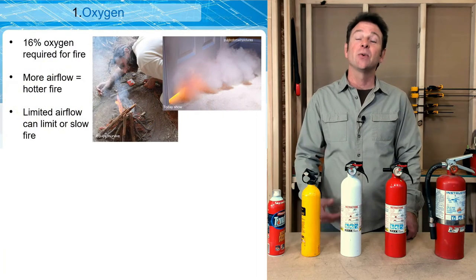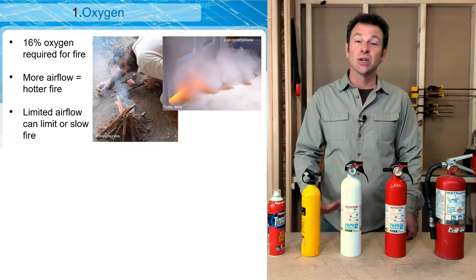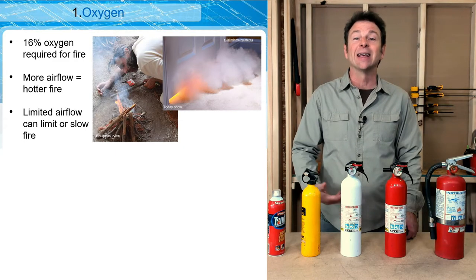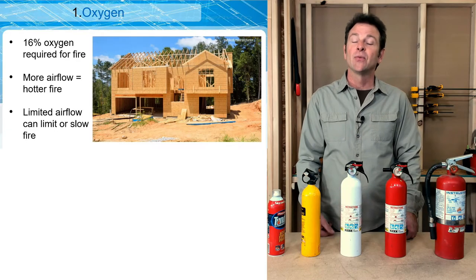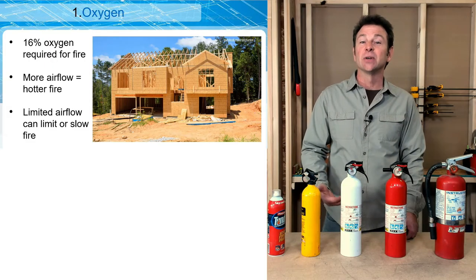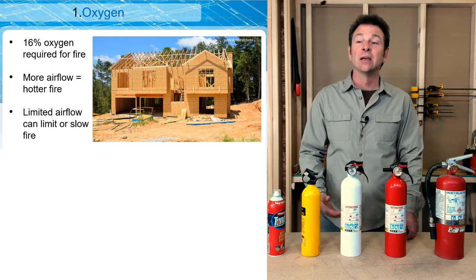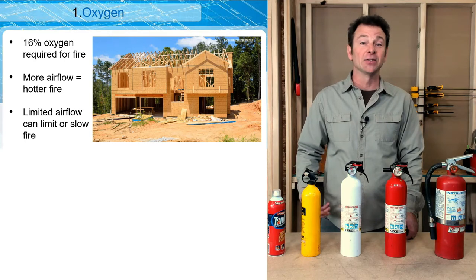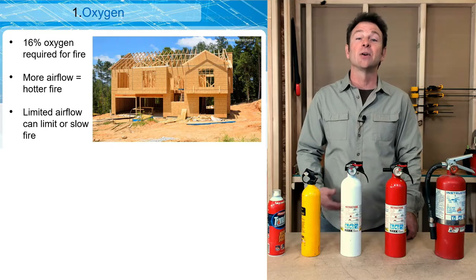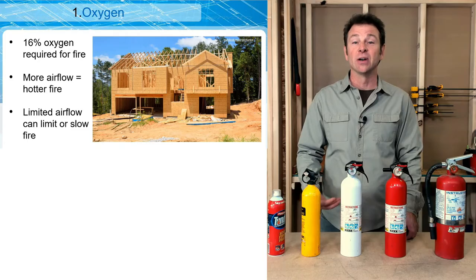Starting with oxygen — we've all tried to light a fire, so we understand that if you stoke a fire or blow on it, the more air or oxygen it receives, the faster and hotter it will burn. Looking at the residential structure shown, it's basically a bonfire ready to happen. There's a lot of airflow through the building that we cannot control, so if it caught fire, it would burn very quickly.